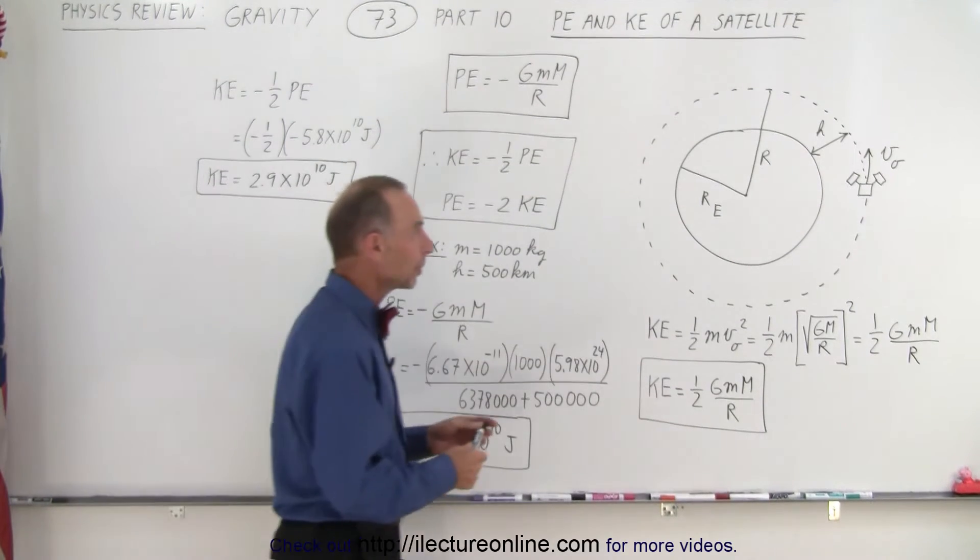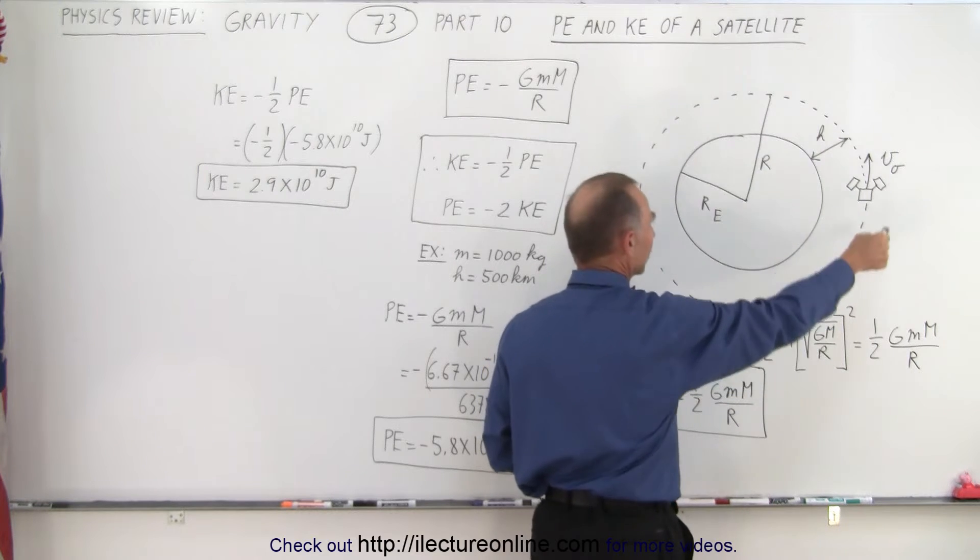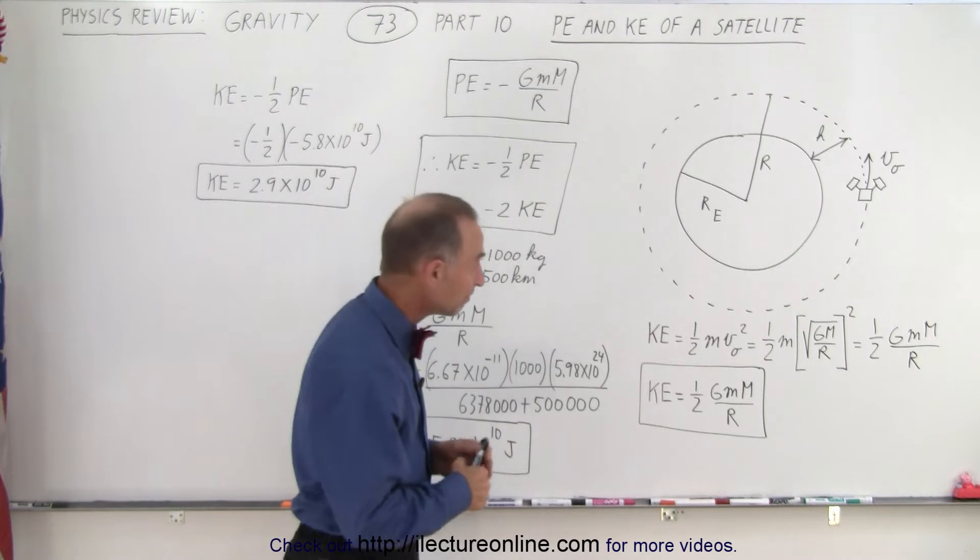And here's an example. Let's say we have a 1,000 kg satellite at a height of 500 km zipping around an orbit around the Earth. Well, how do we find its kinetic energy?